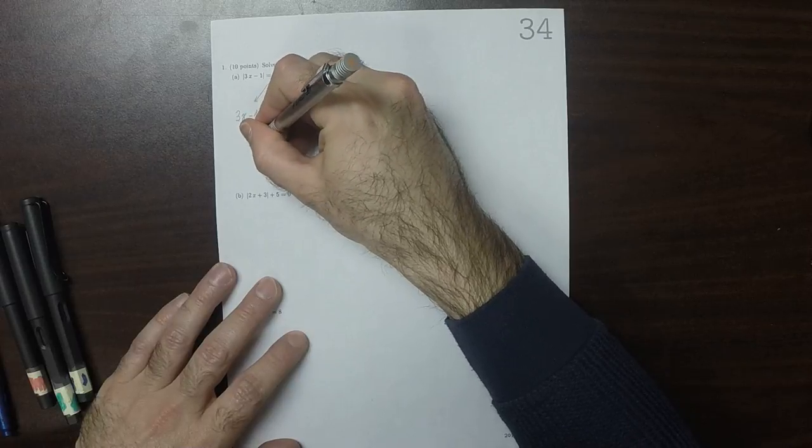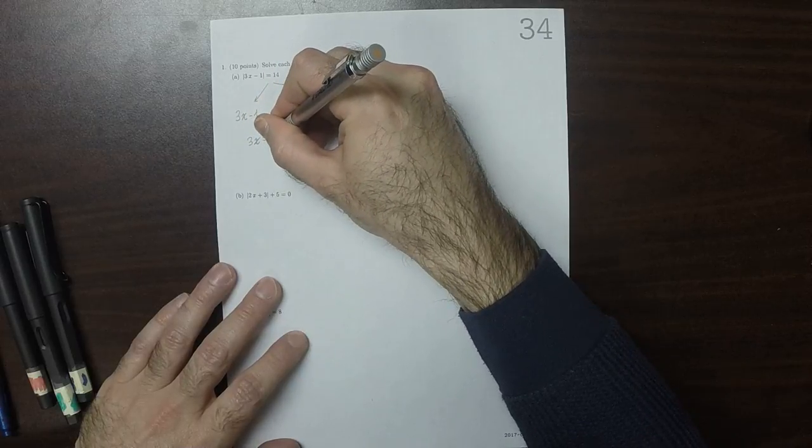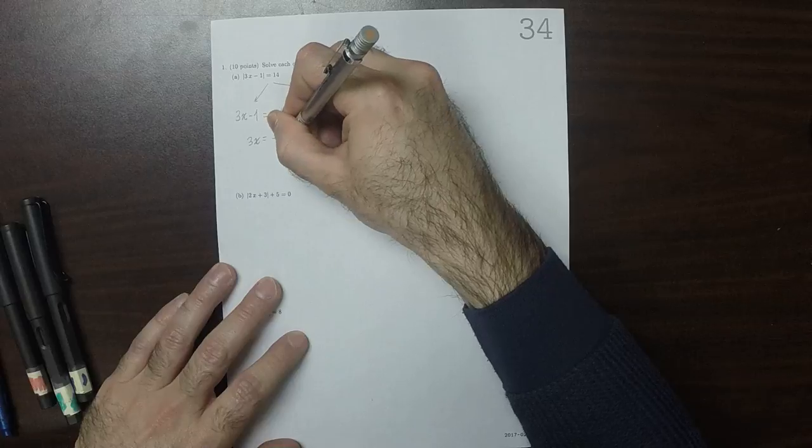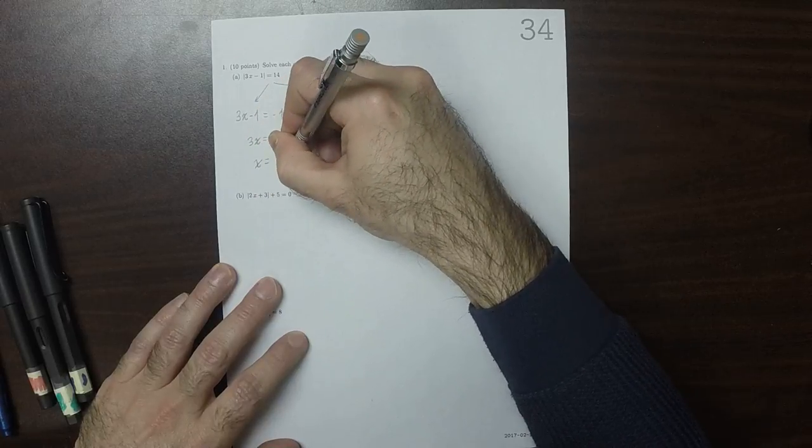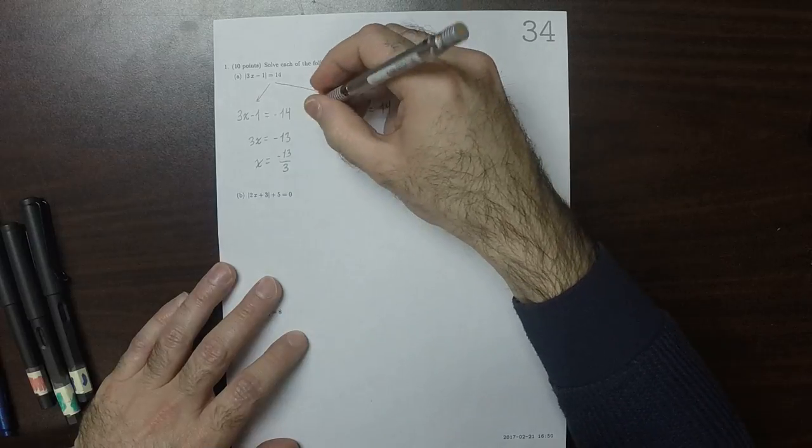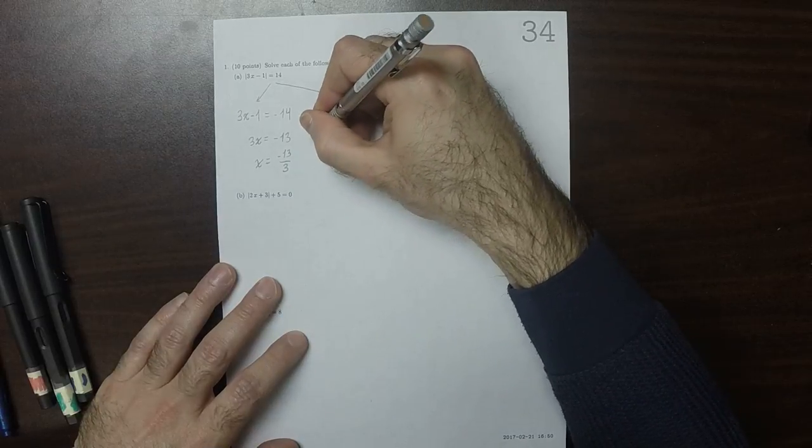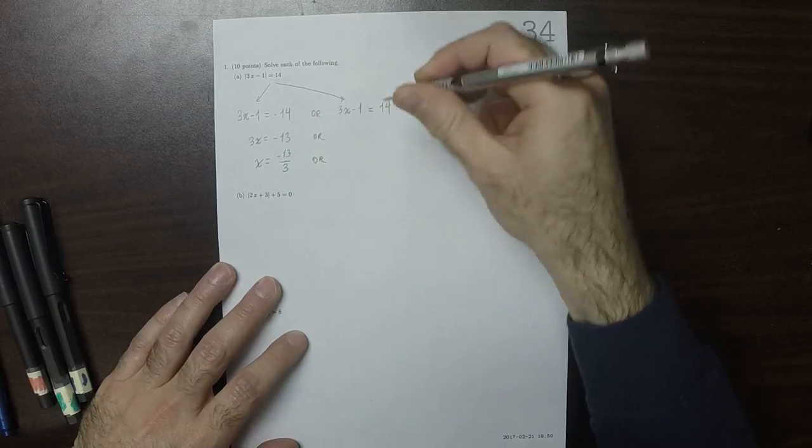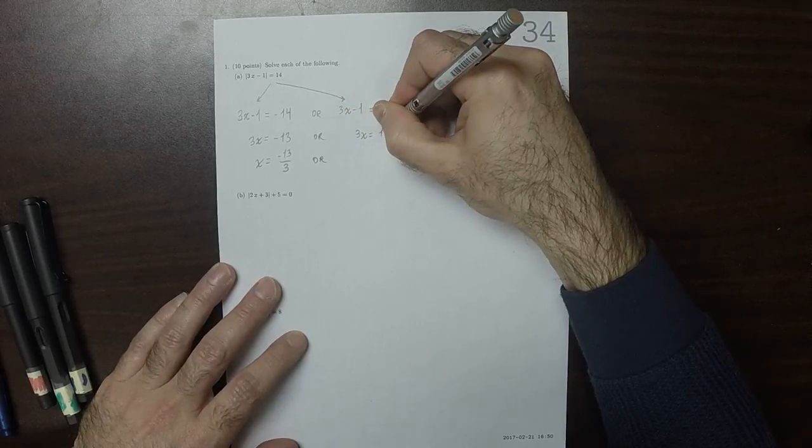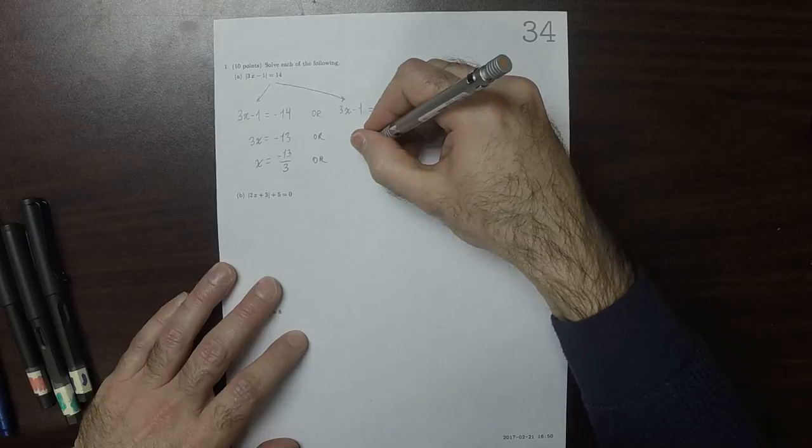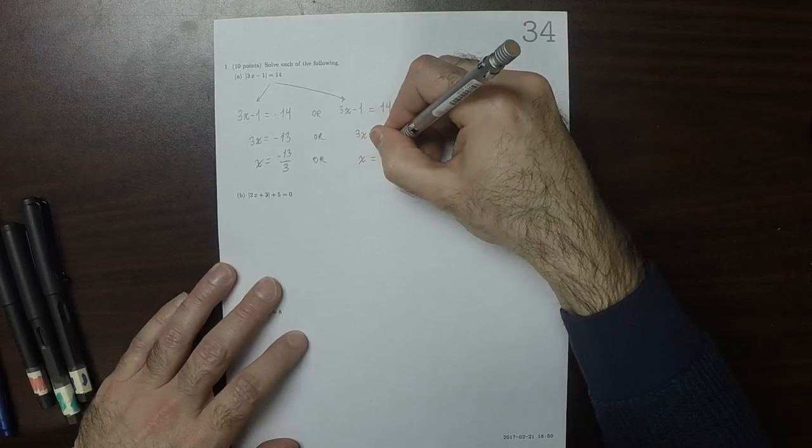That is, 3x is negative 13, which is x is negative 13 over 3, or 3x is 15, so x is 5.